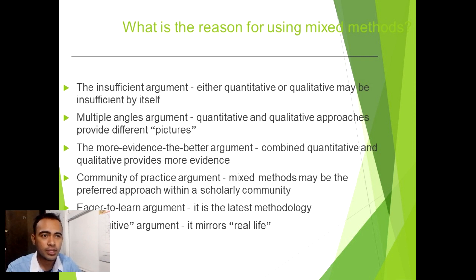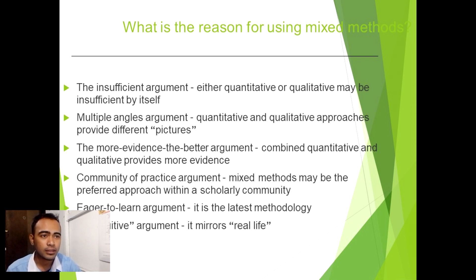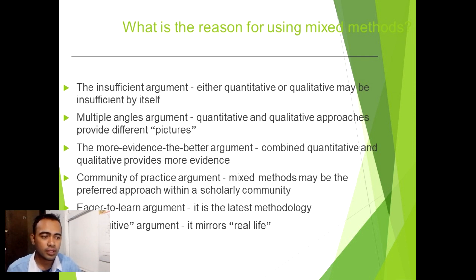Reasons for mixing methods: these are the reasons for mixing a method. The first is the insufficient argument — either quantitative or qualitative may be insufficient by itself for the data. When data is lacking for one approach, we need the other. The next is the multiple angles argument — quantitative and qualitative approaches provide different pictures. If the quantitative is lacking for proving the data we need, therefore we need some qualitative data to have concrete information for our research. Next is the more evidence and better argument — combining quantitative and qualitative provides more evidence.